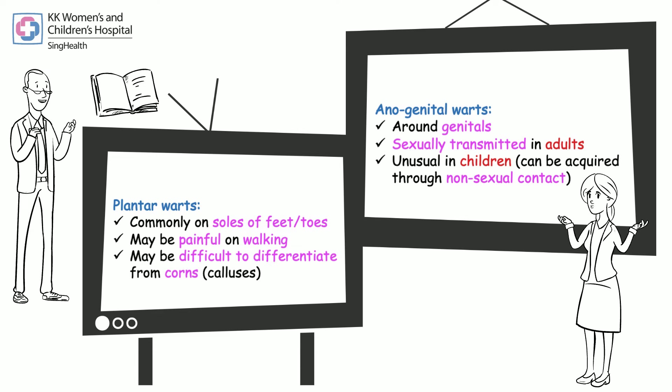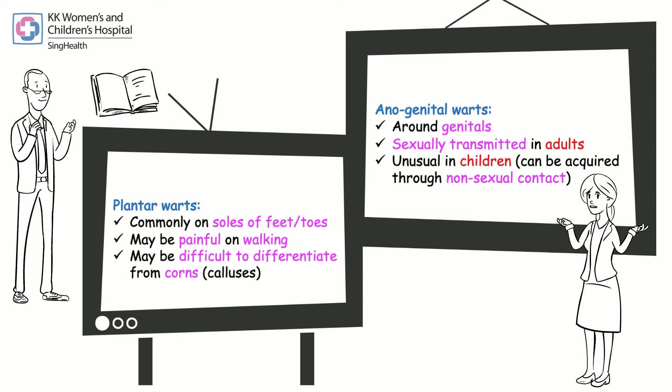Anogenital warts are found around the genitals. They are sexually transmitted in adults. They are unusual in children and can be acquired through non-sexual contact.